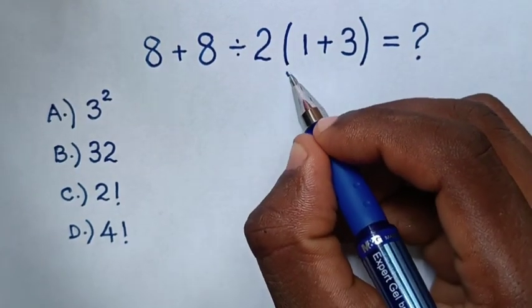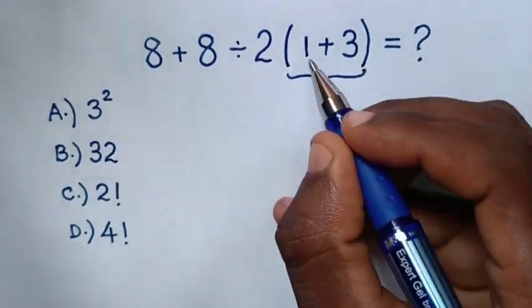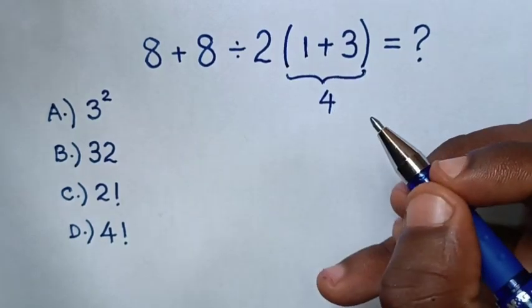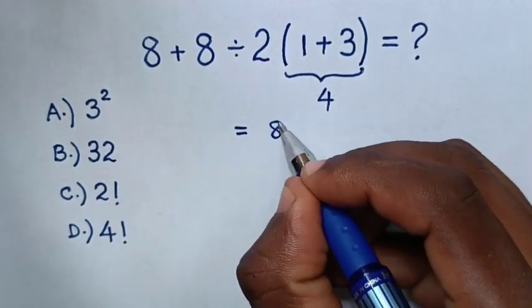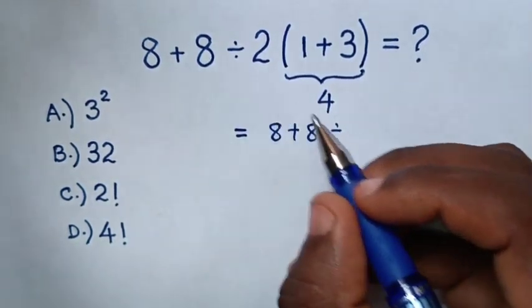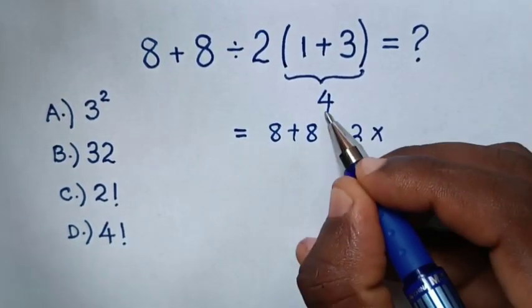So, first we'll start with addition inside the brackets. So, this plus this is 4. Then, it will be equal to 8 plus 8 divided by 2 times 4.